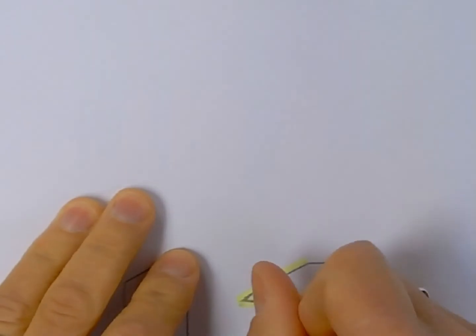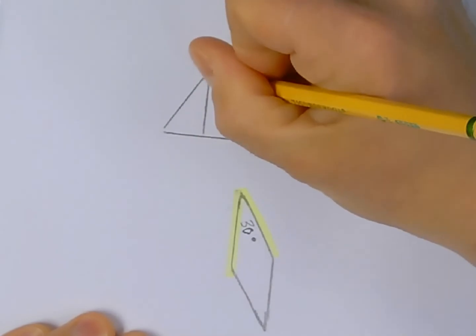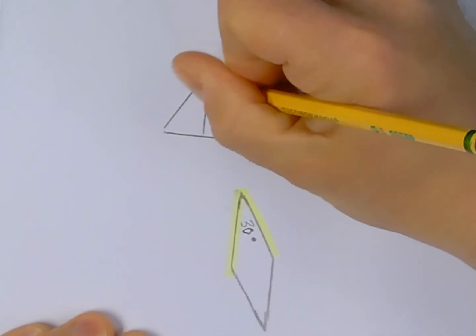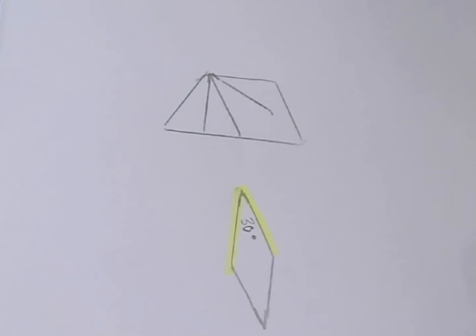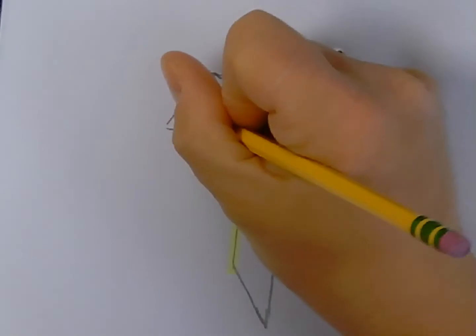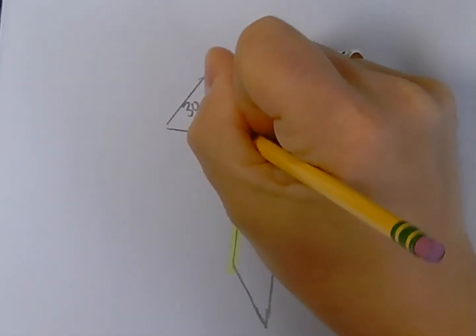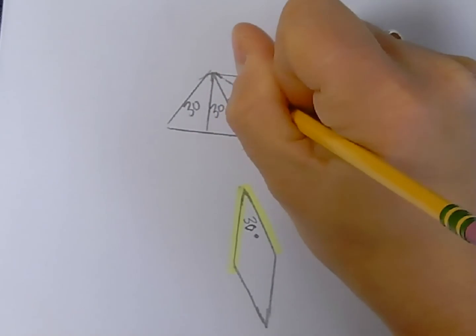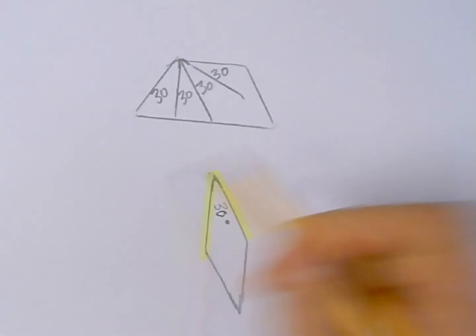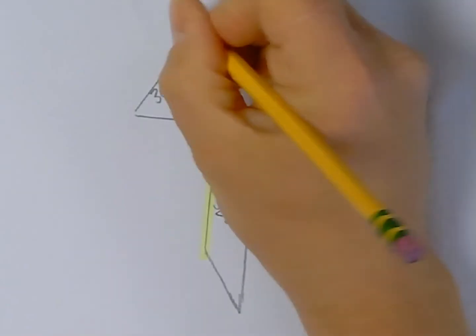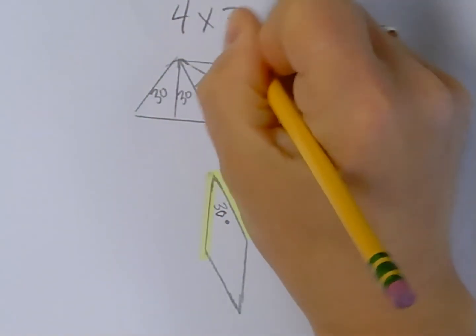So if this is 30 degrees, right, if I look at all four of these angles that fit within the trapezoid here, if this is 30, then this would be 30, and this would be 30, and this would be 30. In other words, I'm looking at an angle that is four times the measurement of a 30 degree angle, or four times 30 degrees.